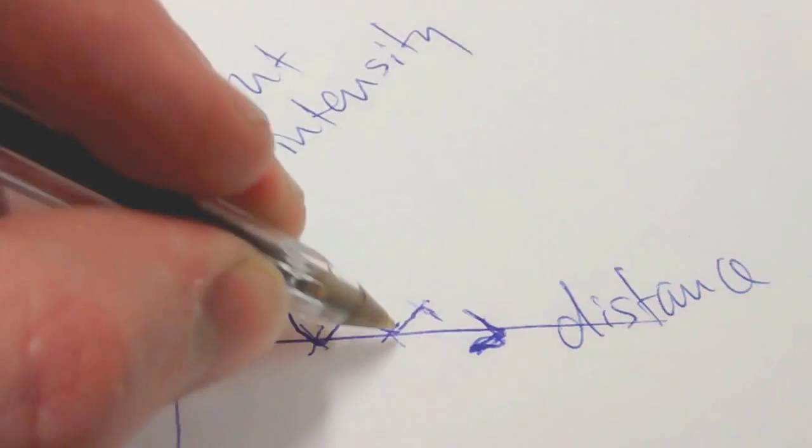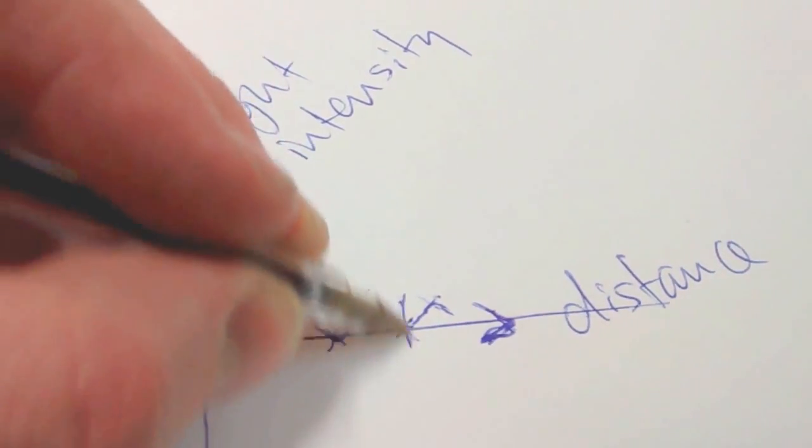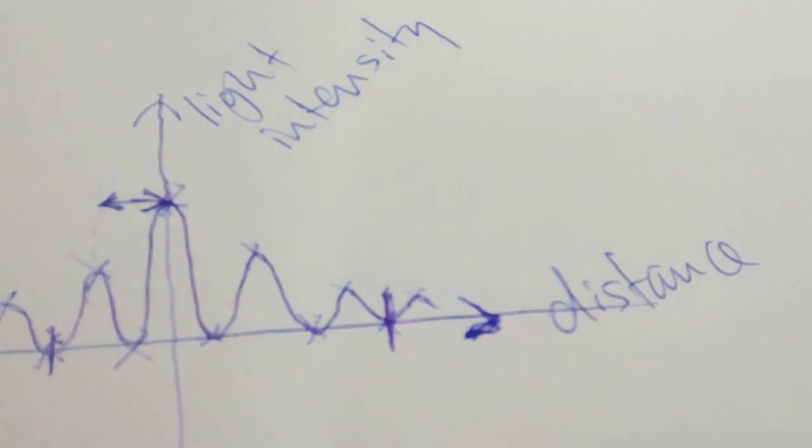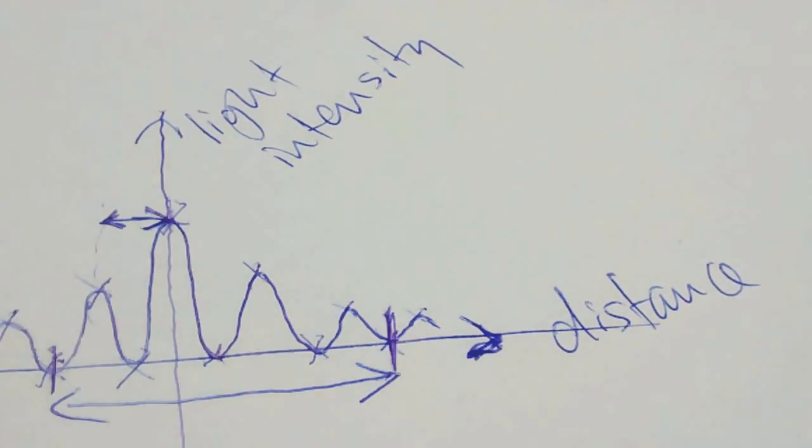So measure one, two, three, four. I didn't quite get five though, so I'd have to do four. One, two, three, four. I'd be better off measuring that distance there and dividing by four to get my fringe separation.